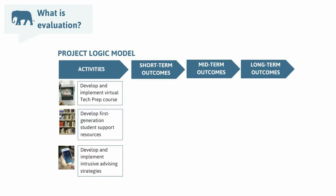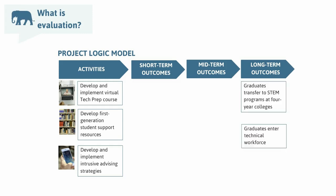This webinar isn't really about building a logic model in detail, so I'll go ahead and create Jen's for her. We have resources to share later about how you can do this for your own project. As I build this logic model, I'd like you to start thinking about what questions the evaluation might want to ask about Jen's project. First, we plug in the activities we know are part of the project. Then we add the outcomes: an increase in the number of graduates who either transfer to STEM programs at four-year colleges or enter the technical workforce.